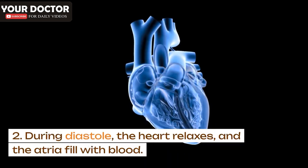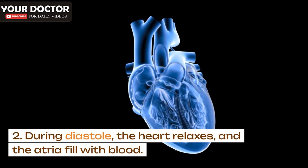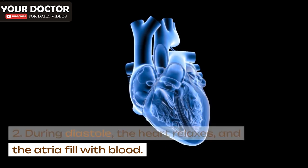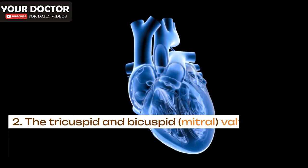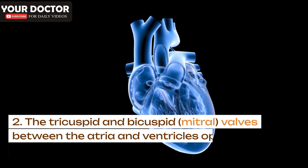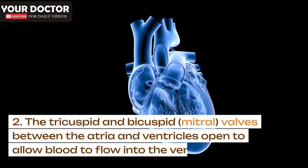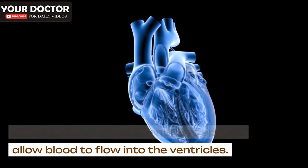During diastole, the heart relaxes and the atria fill with blood. The tricuspid and bicuspid (mitral) valves between the atria and ventricles open to allow blood to flow into the ventricles.